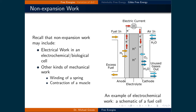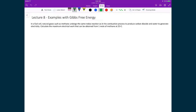Non-expansion work is any work that doesn't involve an expansion. Examples include electrical work in an electrochemical or biological cell, or other kinds of mechanical work such as winding of a spring or contraction of a muscle. The predominant example used in this course will be electrochemical work. On the right is a diagram of a fuel cell, which is one example of an electrochemical process. The hydrogen-rich fuel reacts at the anode to form protons and electrons. The electrons move through the circuit, while the protons move through an electrolyte, where they both react with oxygen to form water at the cathode. The change in Gibbs free energy can be used to determine the amount of energy available to do work from a cell such as this. Let's now do an example where we calculate the non-expansion work done by a fuel cell.